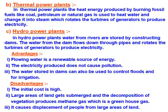Disadvantage: initial cost is high for installing hydropower plants. A large area of land gets submerged, and decomposition of vegetation produces methane gas, which is a greenhouse gas. It also causes displacement of people from large areas of land.